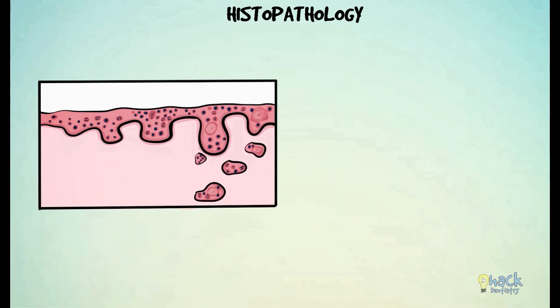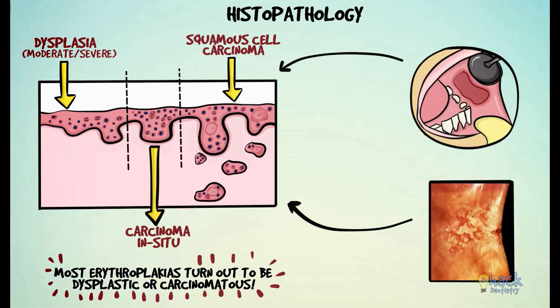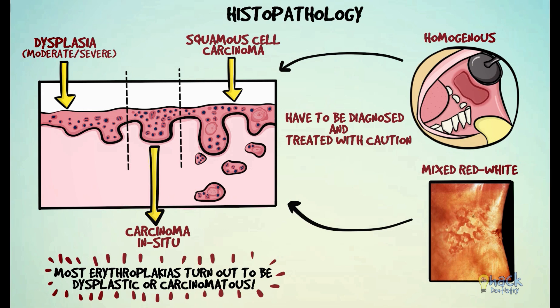The histopathology for Erythroplakia may vary from showing dysplastic features, carcinoma in situ, or even invasive squamous cell carcinoma. Since most Erythroplakias turn out to be either dysplastic or carcinomatous, it is generally agreed that all red lesions — either homogeneous or with white components — have to be diagnosed and treated with caution unless proven otherwise.